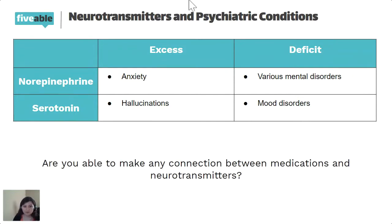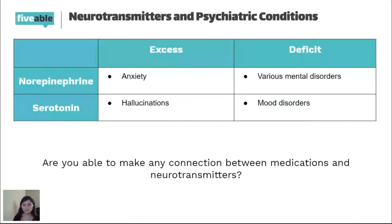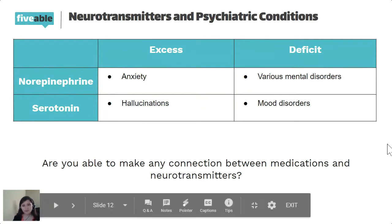The connection between medications and neurotransmitters is relatively clear. Antidepressants such as SSRIs boost serotonin for mood disorders, and there are other antidepressants that boost other neurotransmitters as well. ACH-related medications are also used for ADHD.